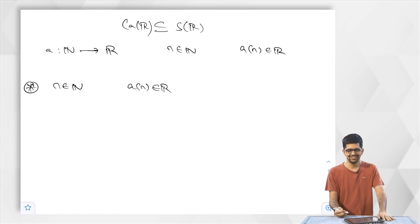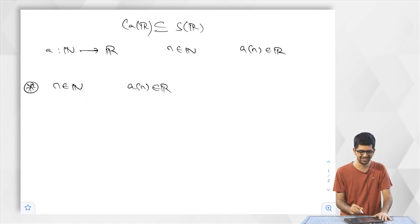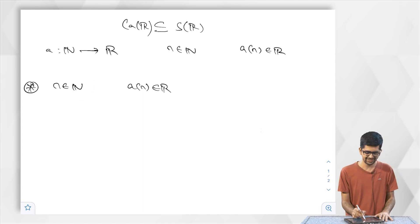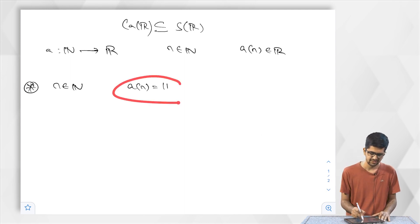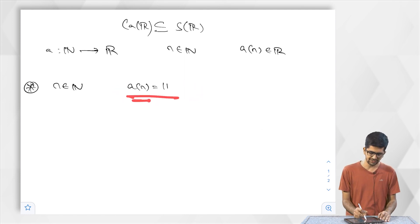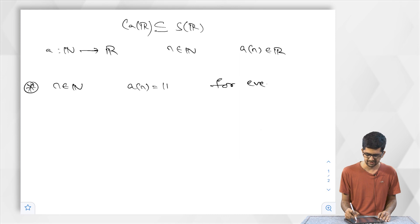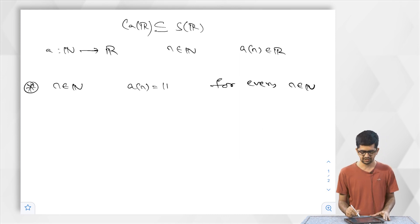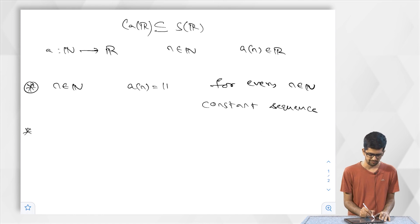The first example: irrespective of what n is, I want to declare A_N to be a single element for each n. Suppose A_N is equal to 11 for every n belonging to N. This is a sequence — the map A from N to R defined by A_N = 11 — called a constant sequence.